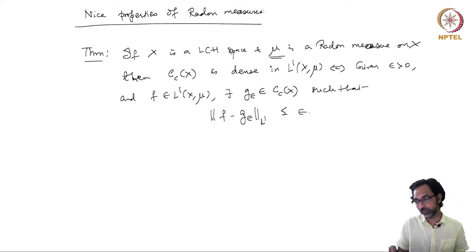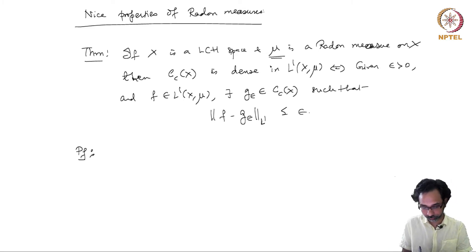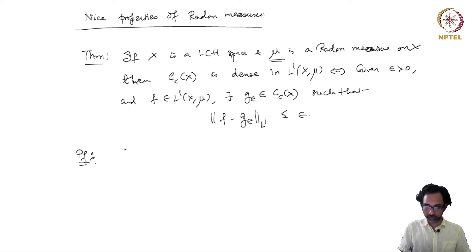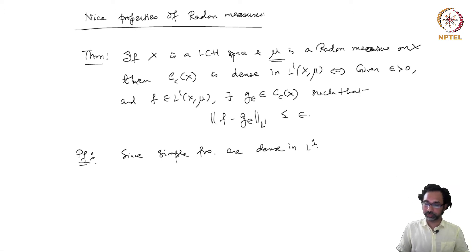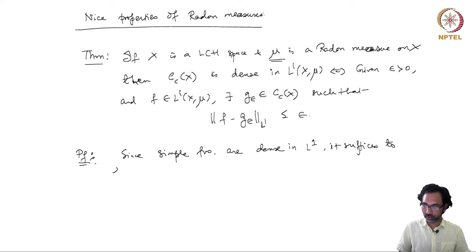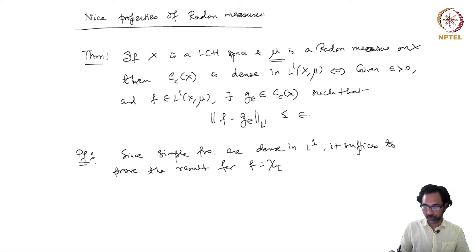But now if you have a Radon measure mu, then also this kind of result holds. Let us see a proof. The first thing to note is that since simple functions are dense in L1, just by the definition of the Lebesgue integral, it suffices to prove the result for f equal to the indicator function of E, where E is a Borel set with finite measure.